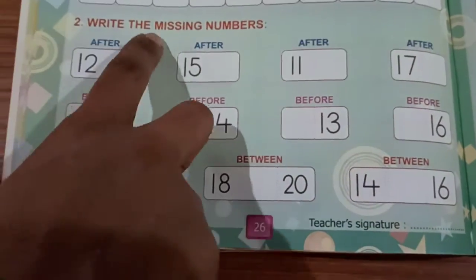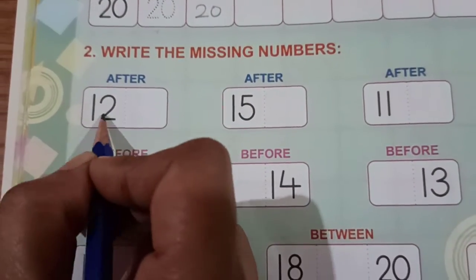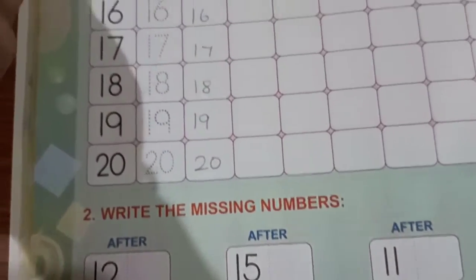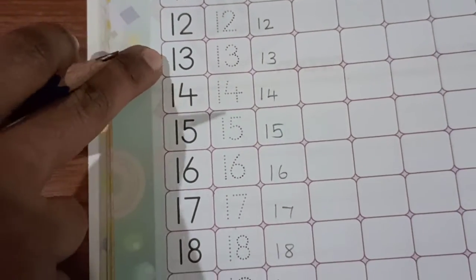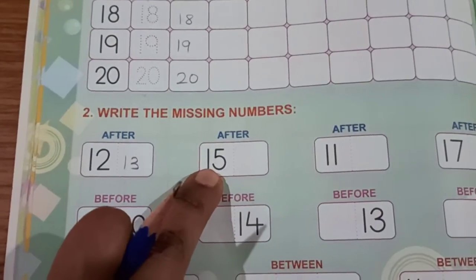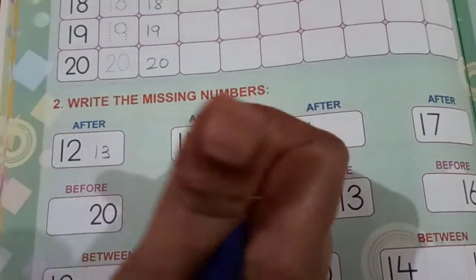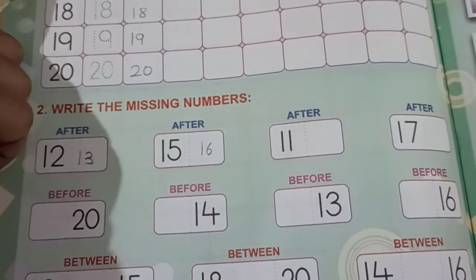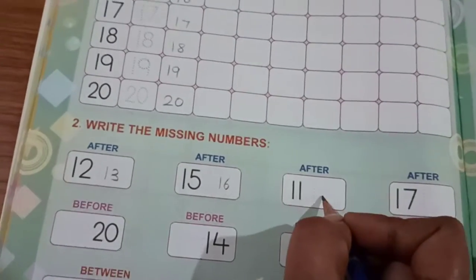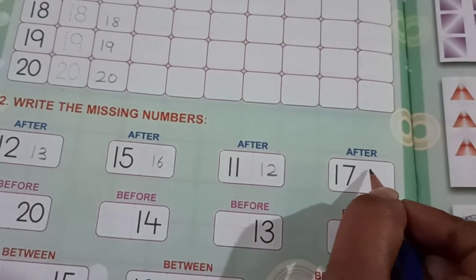Again, here write the missing numbers. Children, here we have number 12. After 12, which number will come? You can check it here easily. After 12, number 13 comes. I am going to write number 13. Here we have number 15. After 15, which number will come? Number 16. After 11, which number will come? 12. After 17, 18.